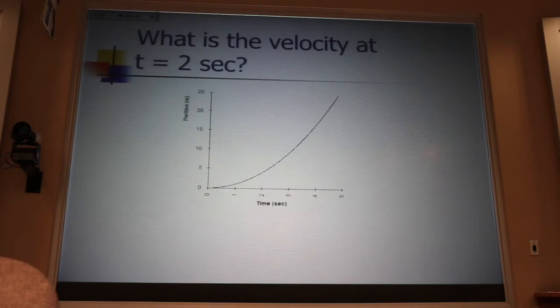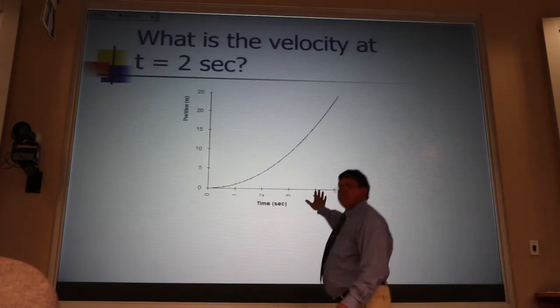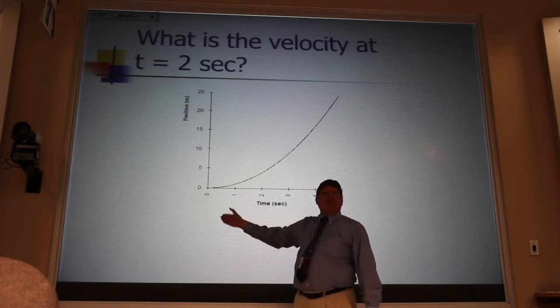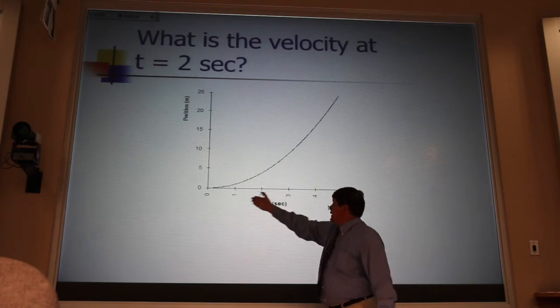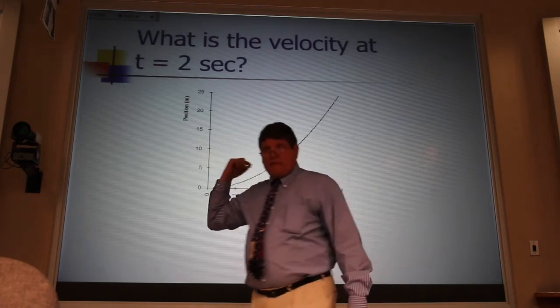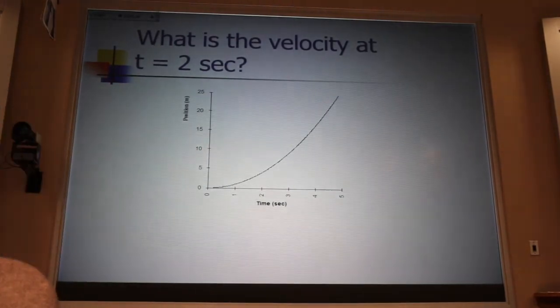If I were to plot the position versus time for that truck, it wouldn't be a straight-line graph. A straight-line graph is uniform motion. It would be a curved graph. If I wanted the velocity from that graph at t equals 2 seconds, what would I do?